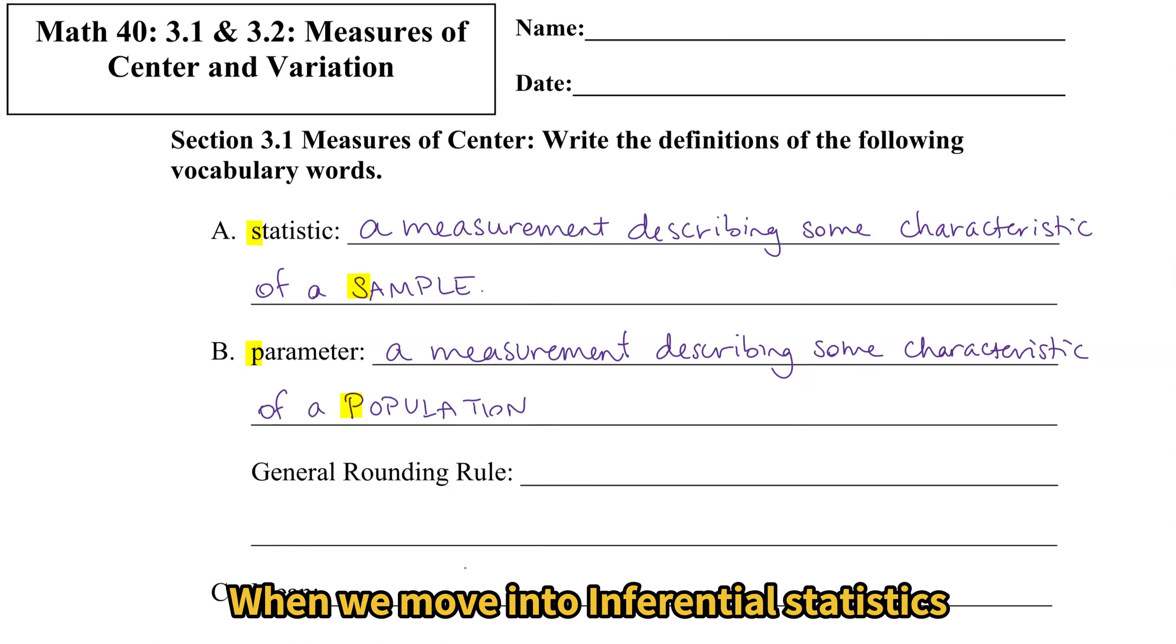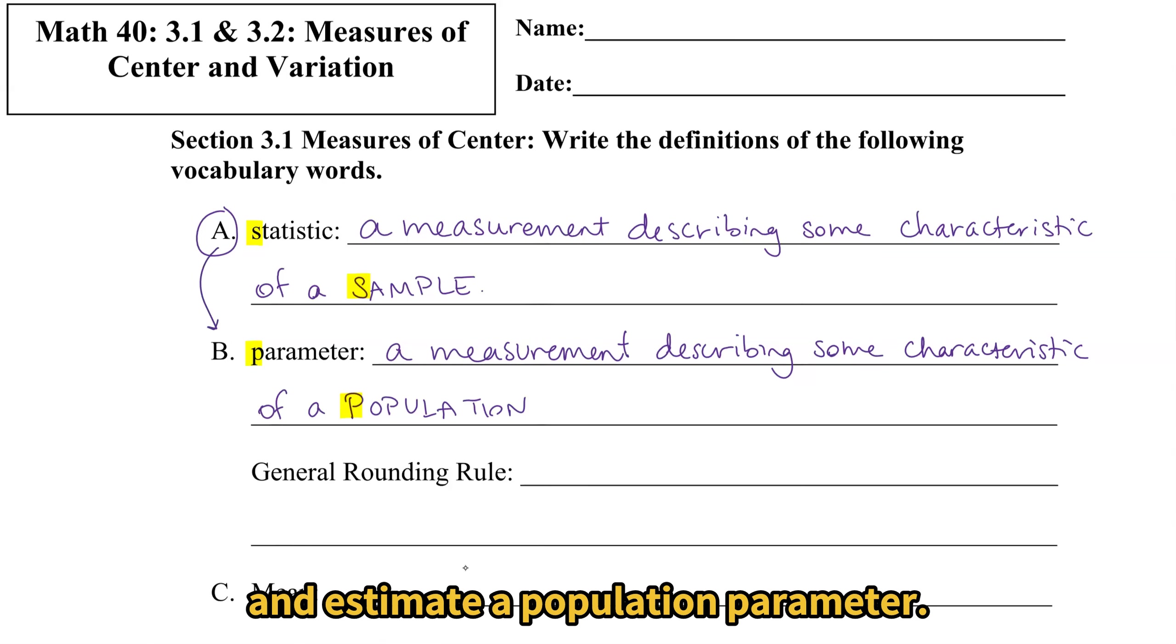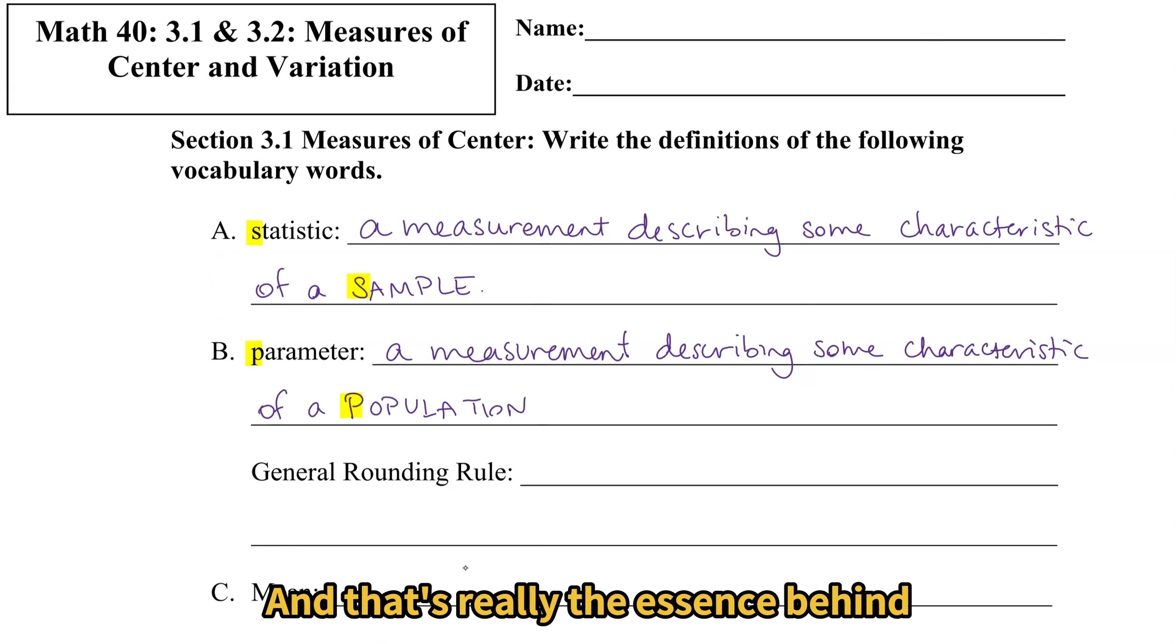When we move into inferential statistics, starting with chapter 7, we will be talking about how to take a statistic and estimate a population parameter. And that's really the essence behind inferential statistics, is to take a sample, get that measurement, that statistic, and use that statistic to estimate the population parameter.